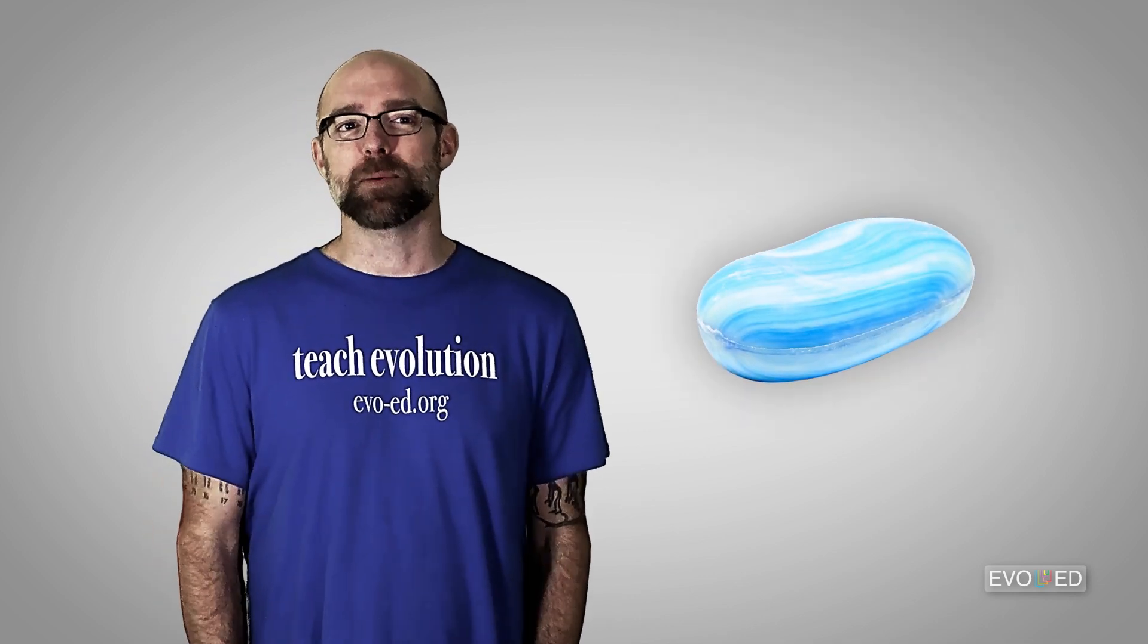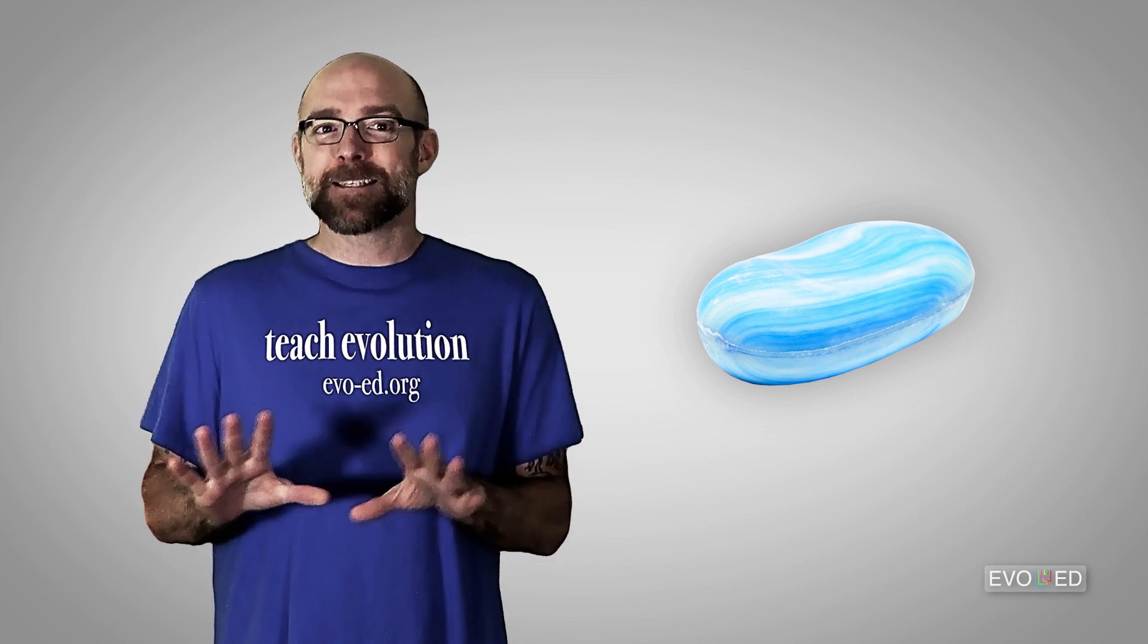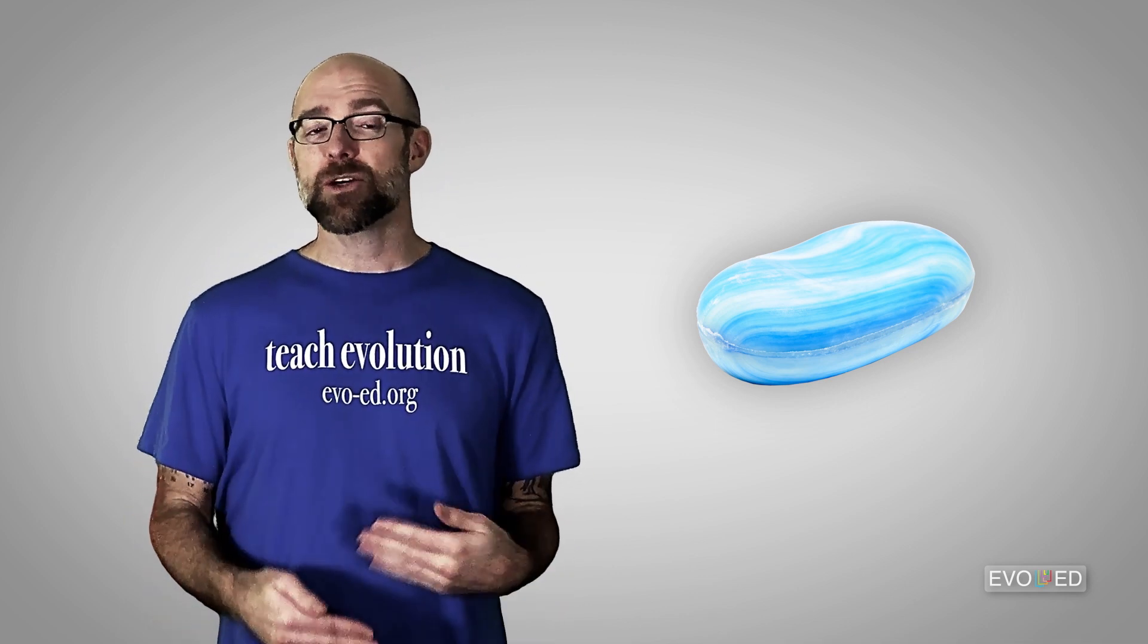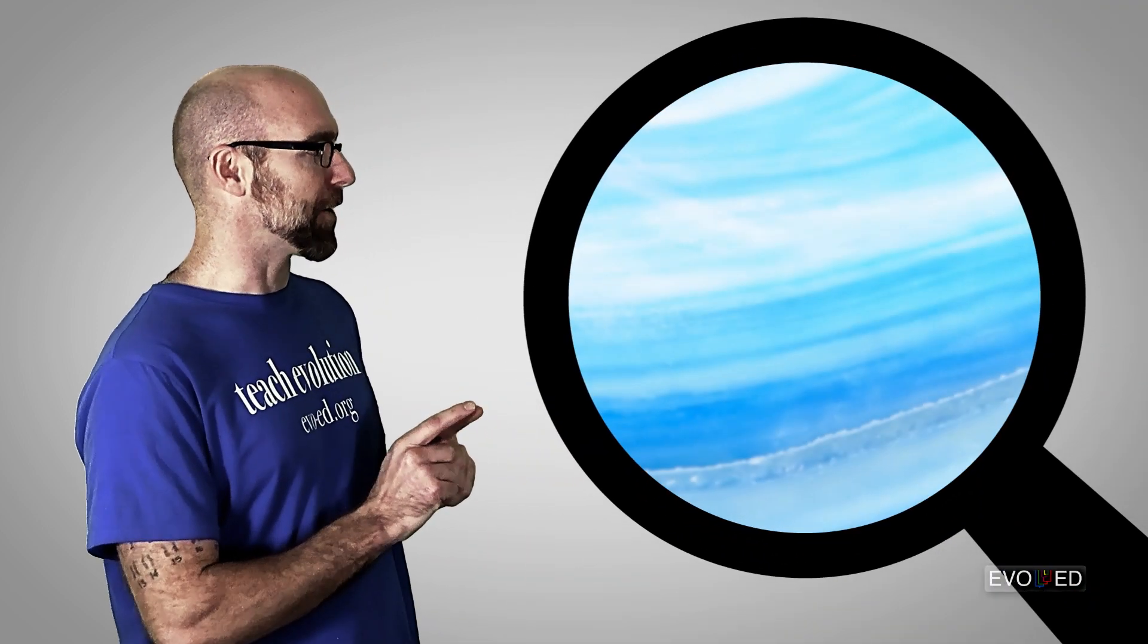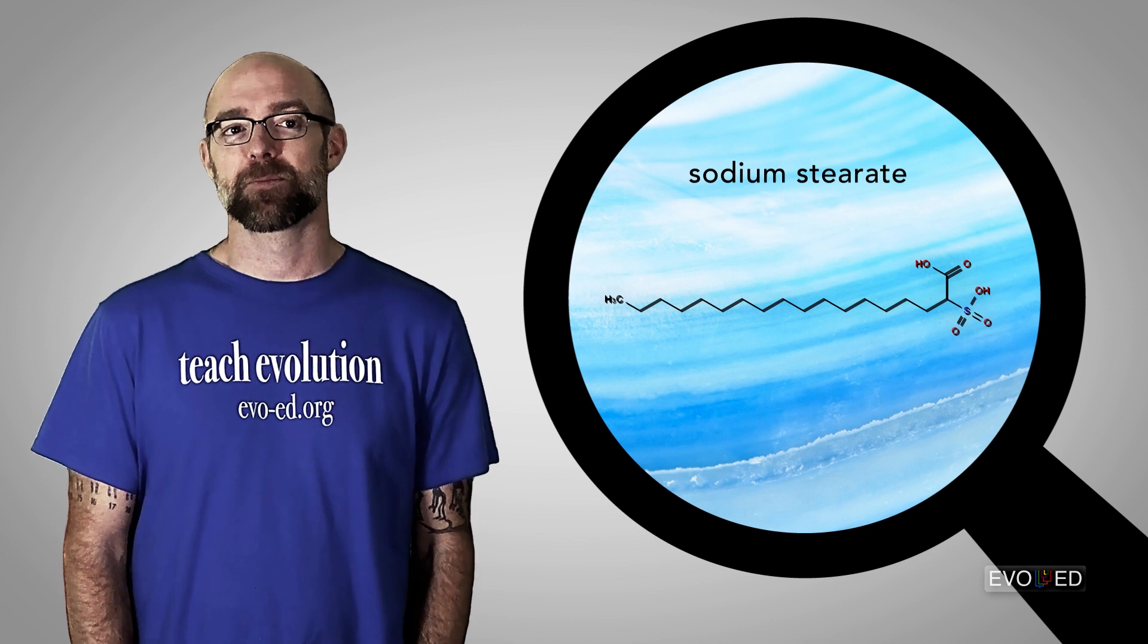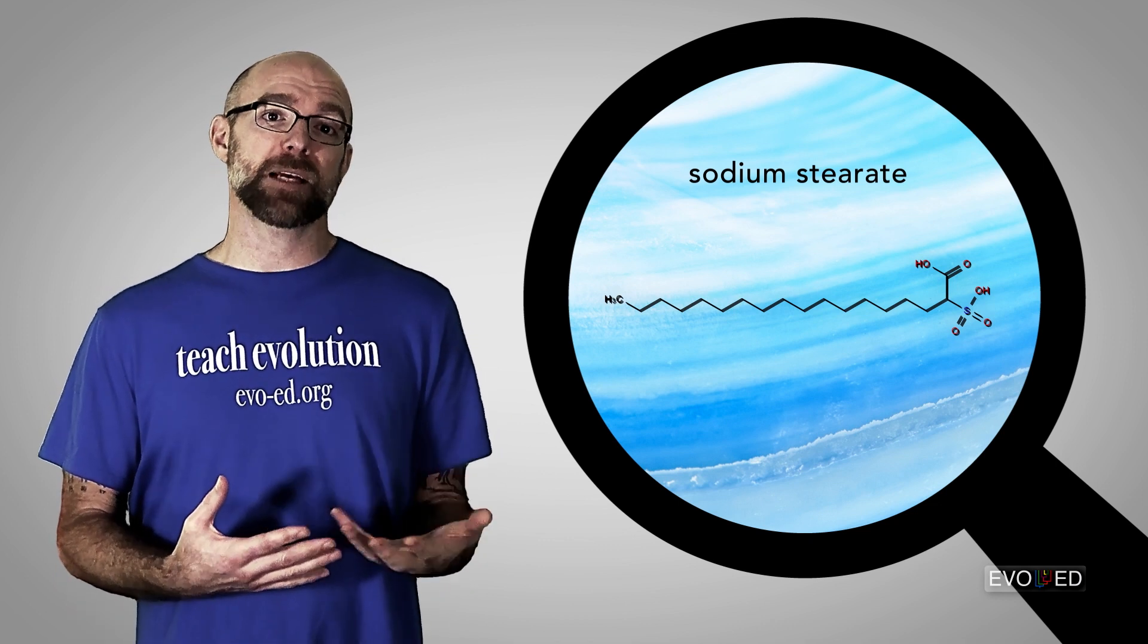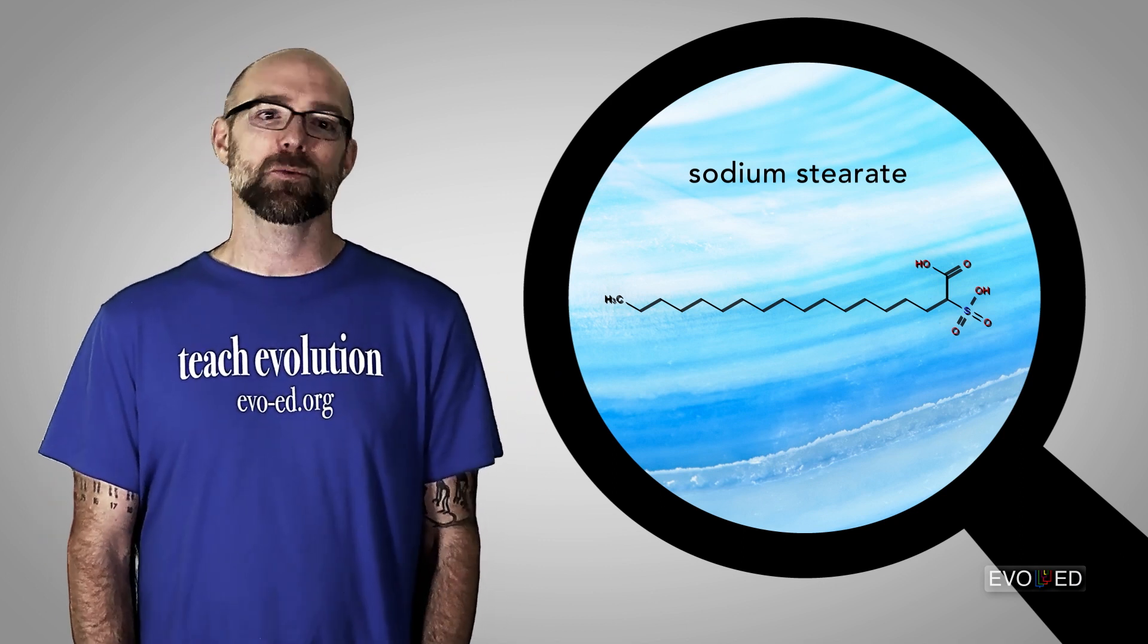Alright, what about soap? One caveat before I start. There are many different types of soap. What I'll show you here is just one type of soap and how that works, but the mechanism from one type of soap to the next is reasonably similar. Alright, let's zoom in here. Now, the key ingredient molecule in this soap is something called sodium stearate. The first thing that sodium stearate can do is to disrupt the membrane around viruses like the coronavirus.